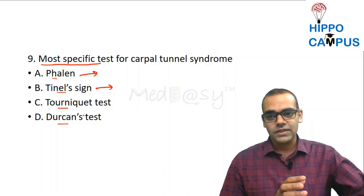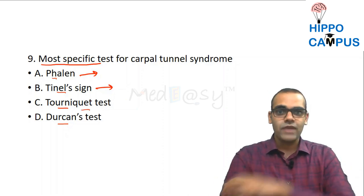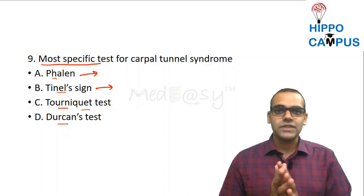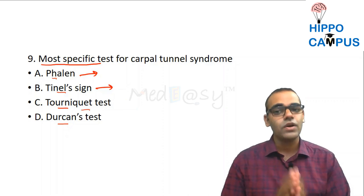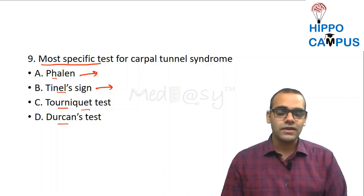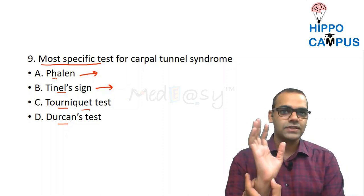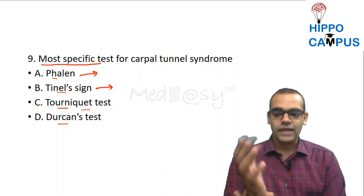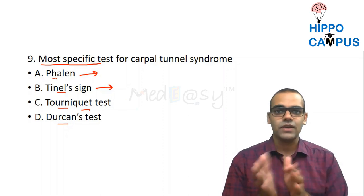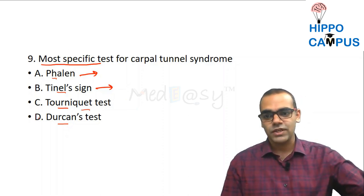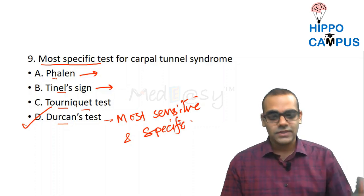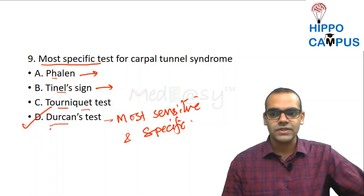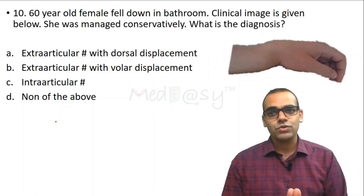The tourniquet test: inflate a tourniquet at the arm above systolic blood pressure — after a few minutes, paresthesia and hyperesthesia appear in the median nerve distribution. The Durkan compression test: compress the median nerve at the flexor retinaculum for 30 seconds — this produces tingling and paresthesia in the median nerve distribution. The answer is the Durkan compression test, which is the most sensitive and most specific test for carpal tunnel syndrome.